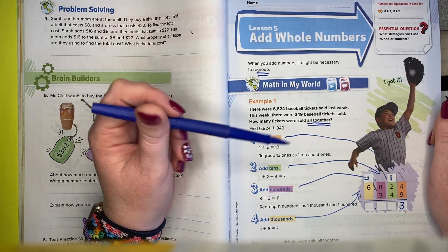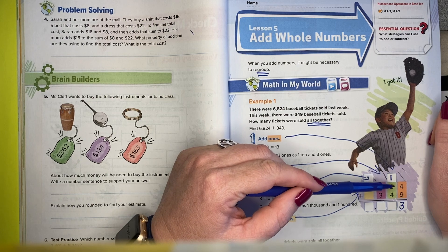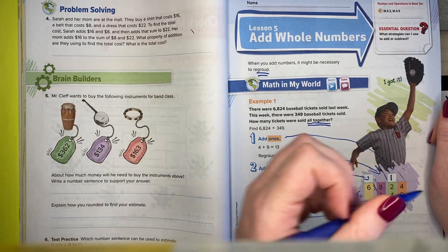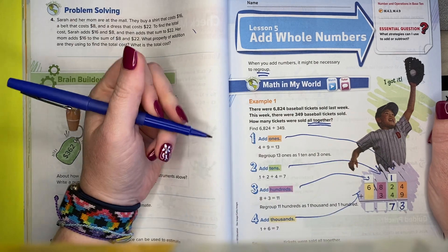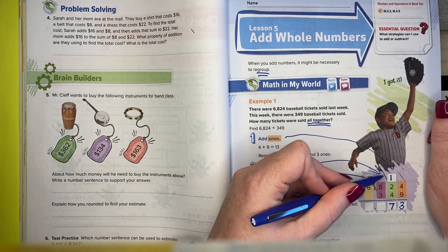Second part, I'm going to add the tens. So now I'm going to add this 1 plus this 2 plus this 4, and I'm going to get 7. That's going to go down here. Nothing to regroup.